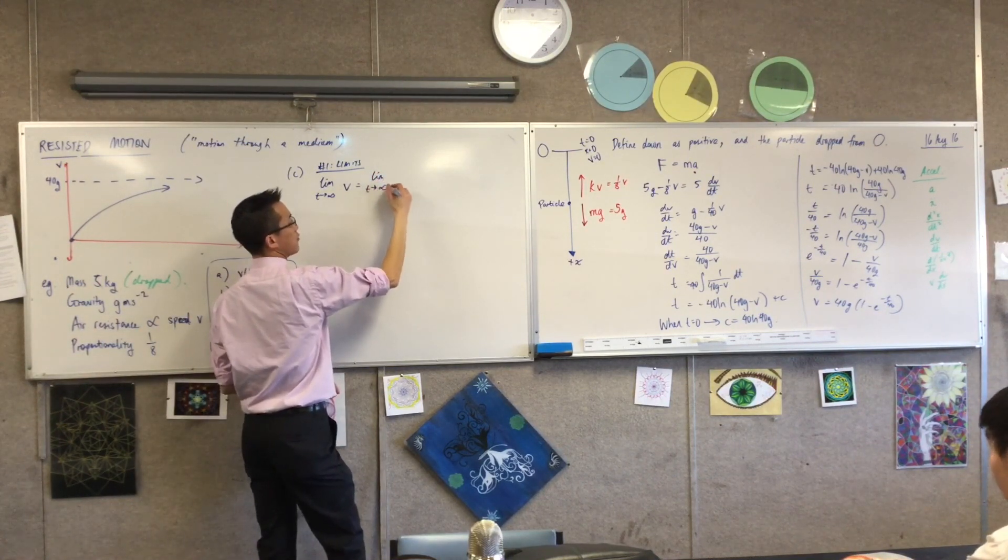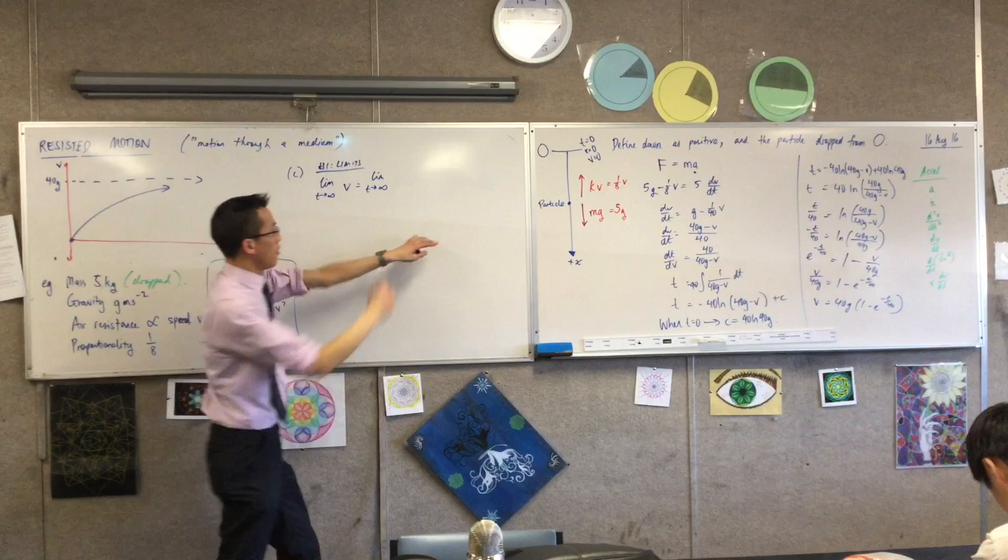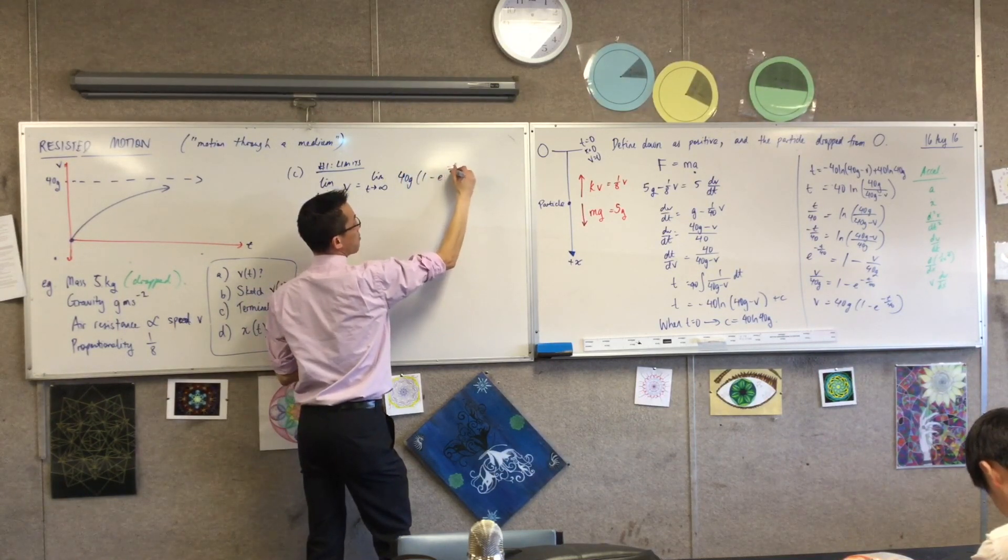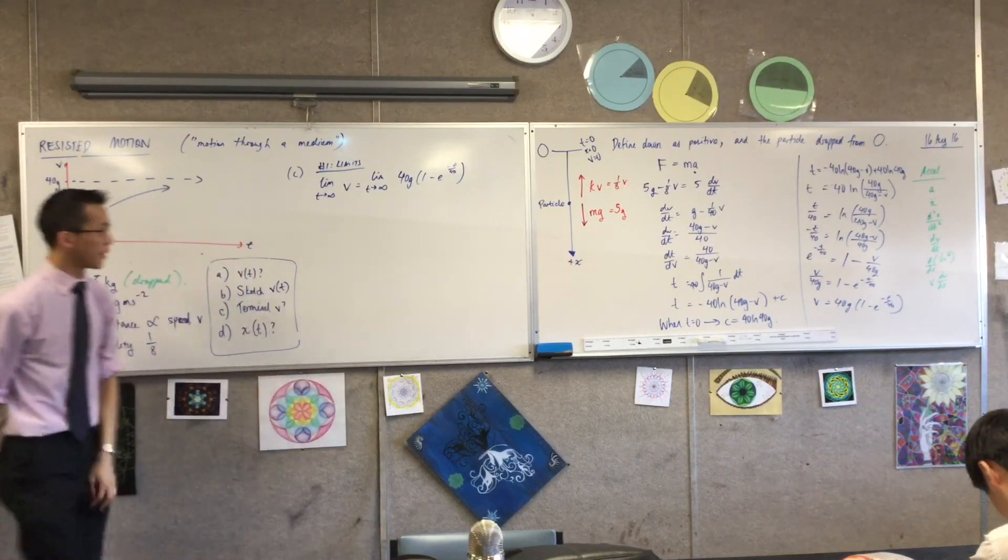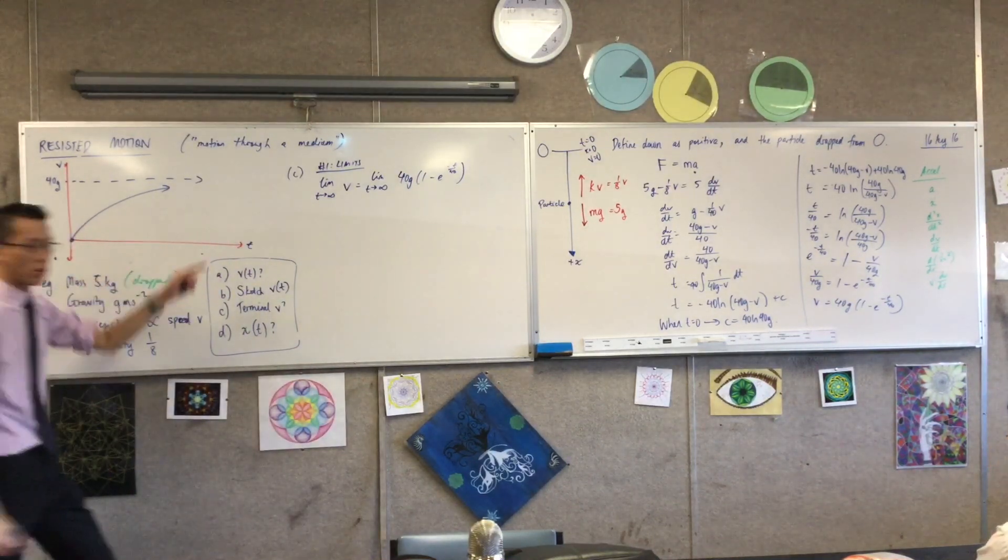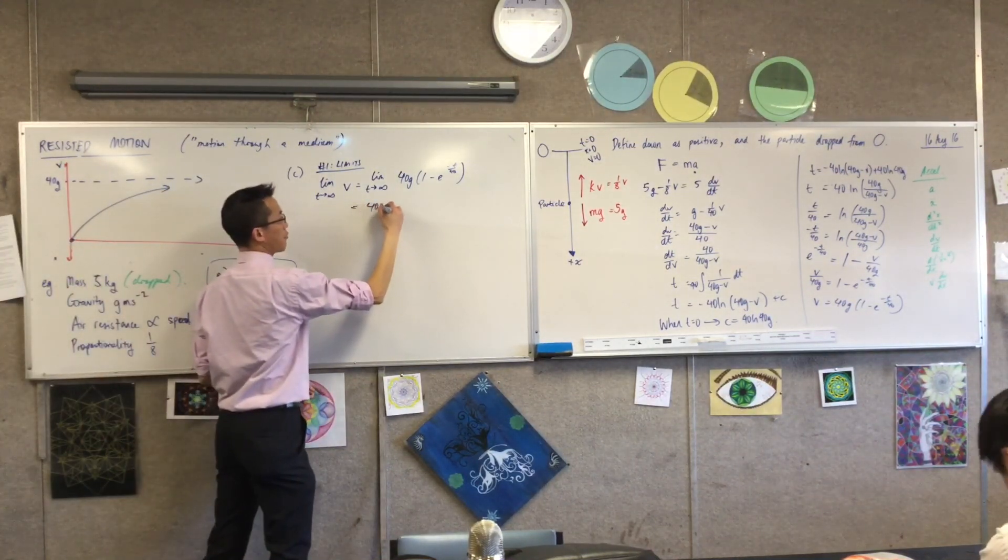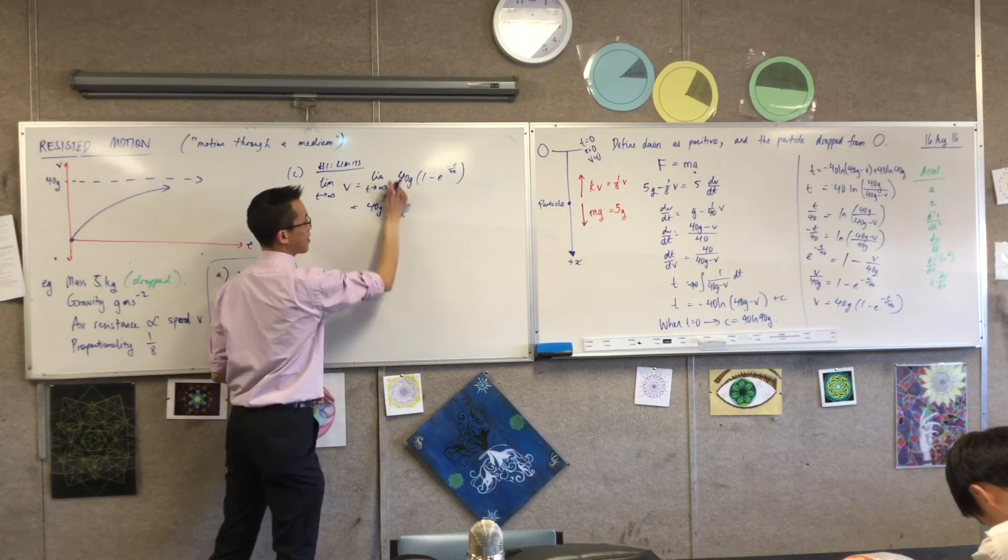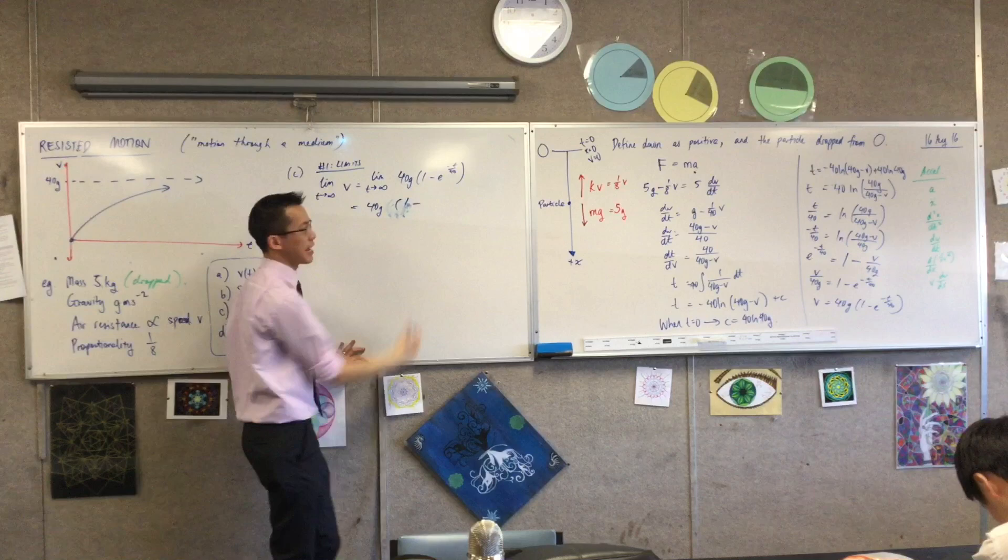One minus, like so. 40G is a constant, so I'm going to bring that guy out the front. The limit is still there. Actually, I'll take that back. I can evaluate the limit. This is going to be one take away.